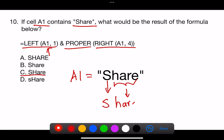Proper, right, A1, 4, turns the string hair into proper case, making the first character uppercase and the rest lowercase, resulting in hair.